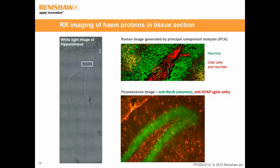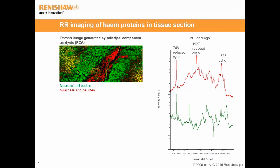This verification with fluorescence imaging was only required once. The components in the Raman image can be explained by the chemical information in the corresponding PC loadings. Reduced cytochrome C was detected in both neuron cell bodies and glial cells, as shown by the reduced cytochrome C band at 748 wavenumber. However, there is a higher level of reduced cytochrome B in the glial cells, shown by the peak at 1127 wavenumber. The Raman spectra present cytochrome information in the tissue section alongside other biomolecules such as proteins and lipids, which may be useful for understanding cell fitness and disease pathogenesis.